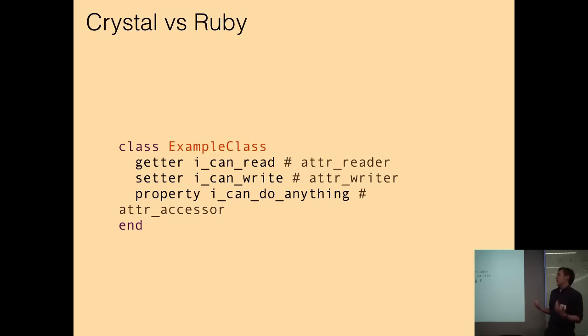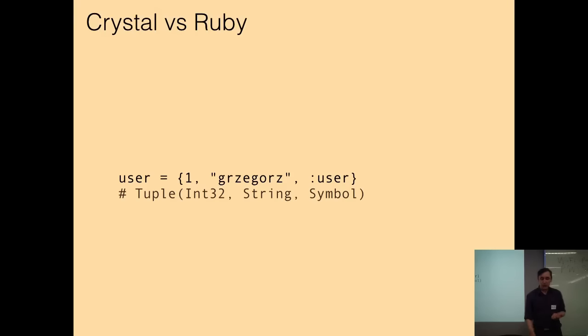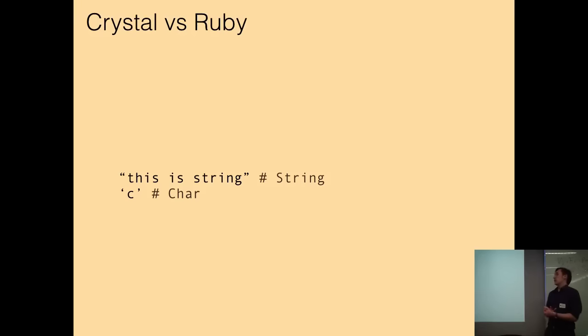Instead of attr_reader, writer, and accessor, we've got getter, setter, and property. And instead of providing a symbol as an argument, you provide the name of the getter or setter. We have a class called tuple, which is basically an array, but it has a limited size. When you create a tuple with three elements, it will always have three elements. It cannot grow bigger. And this is something that I really love. In the Ruby community, there are constant arguments about whether to use single or double quotes, and each side has its advantages. But in Crystal, it is solved a different way. If you use double quotes, it's a string. If you use single quote, it's just a single character. So the problem is solved on the level of the language syntax.